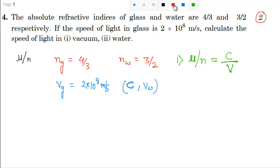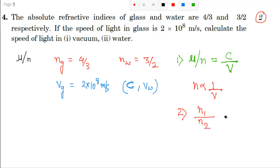From this formula you can see that refractive index is inversely proportional to the velocity of light in that medium. The second formula is: refractive index of medium 1 divided by refractive index of medium 2 equals v2 divided by v1. By using these two formulas, it is very easy to answer this question.